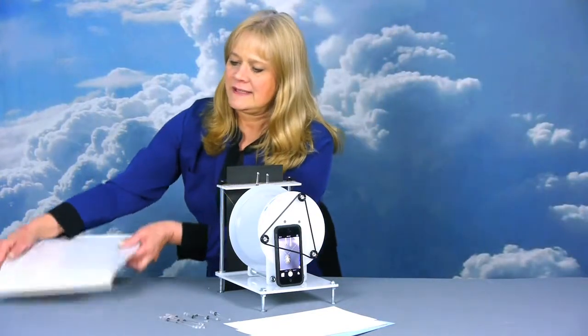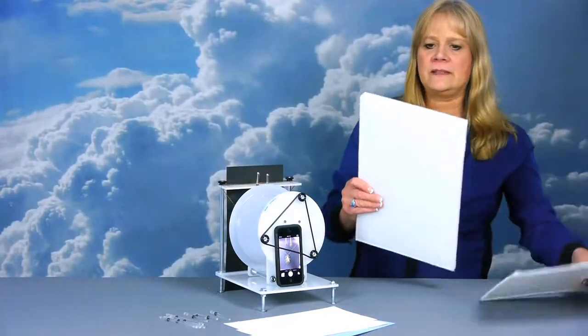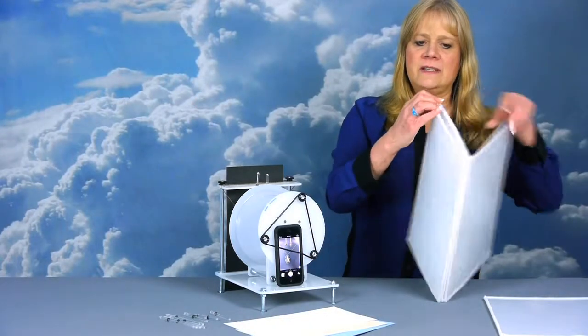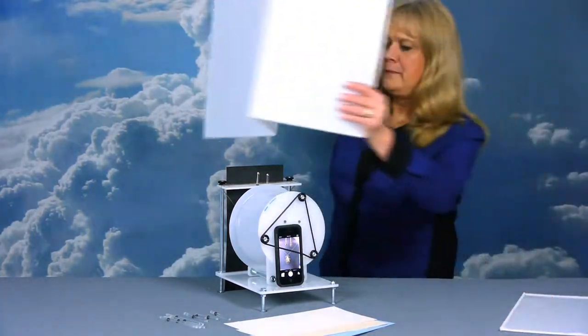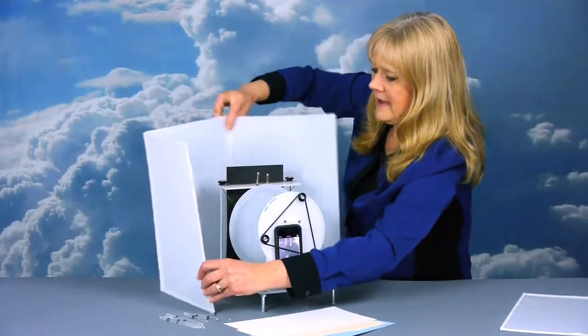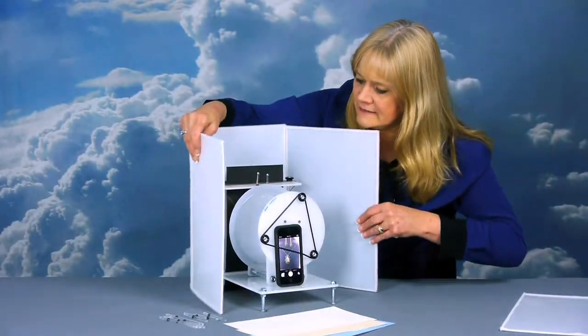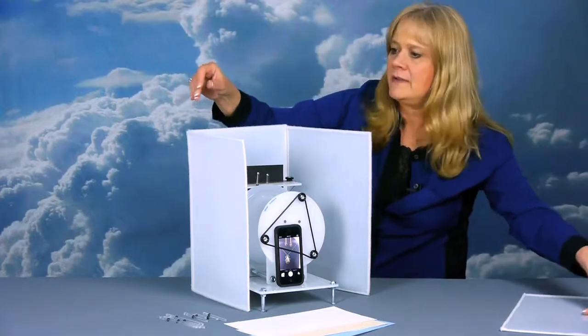It's panels of translucent material with velcro on the edges. Just match up the male and female parts, put the panels around the earring stand, and then put on the top.